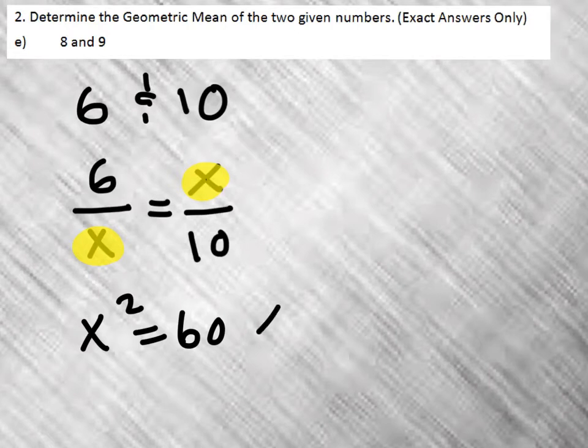And when we take the square root of both sides, we get x equals plus or minus the square root of 60.